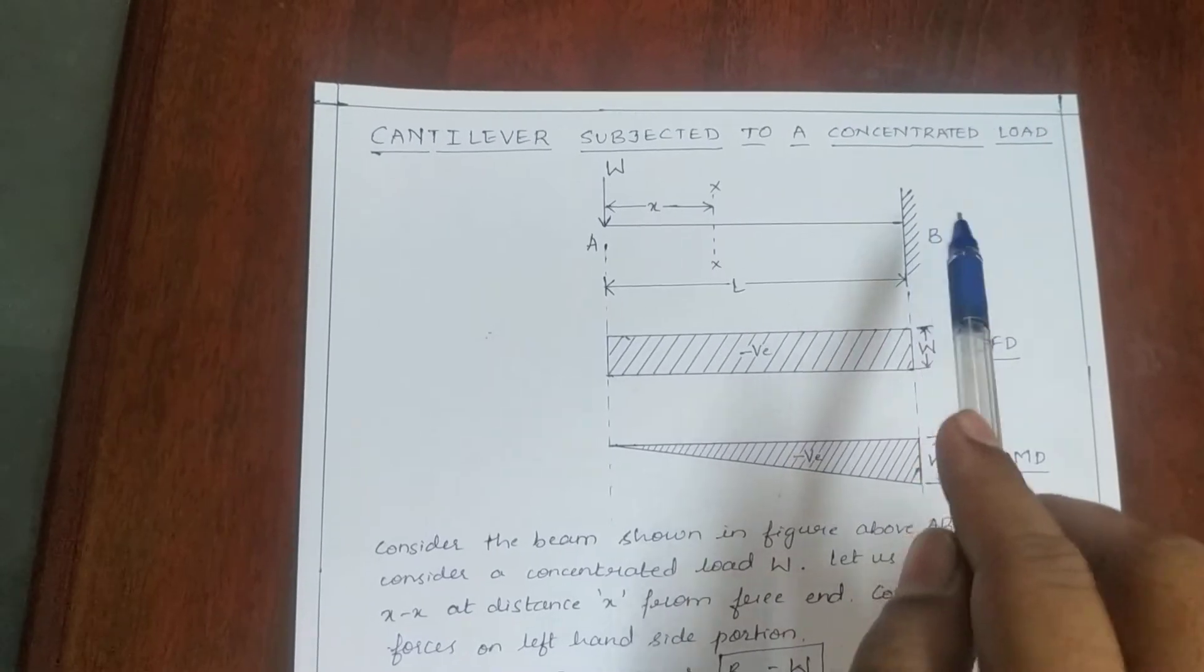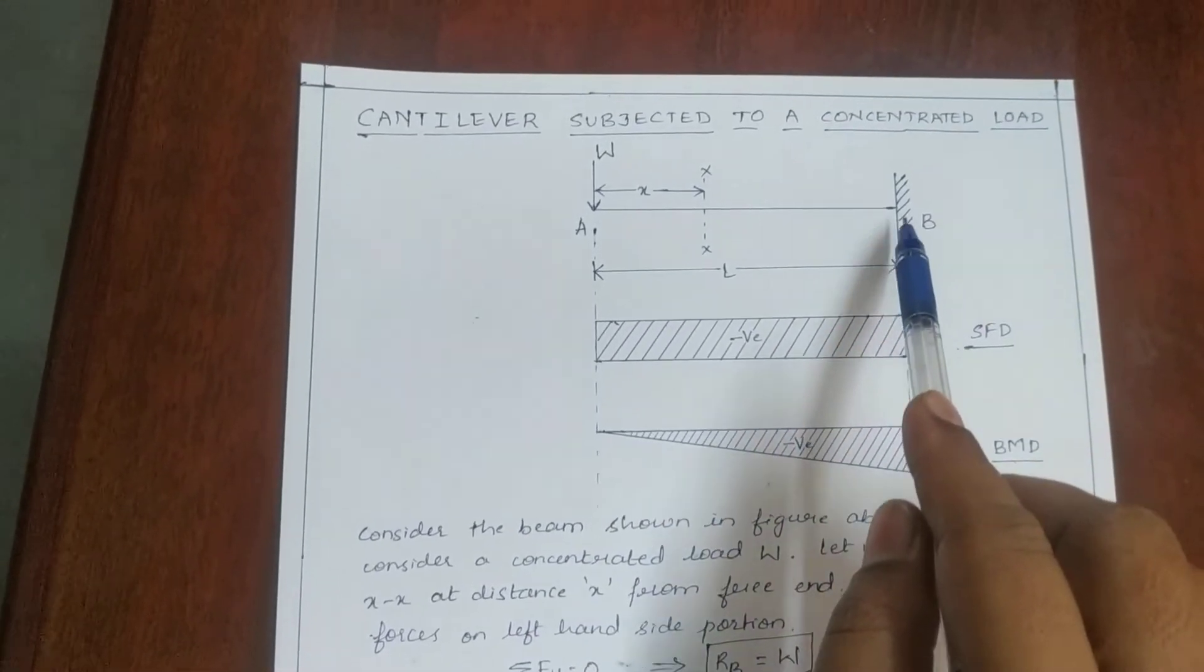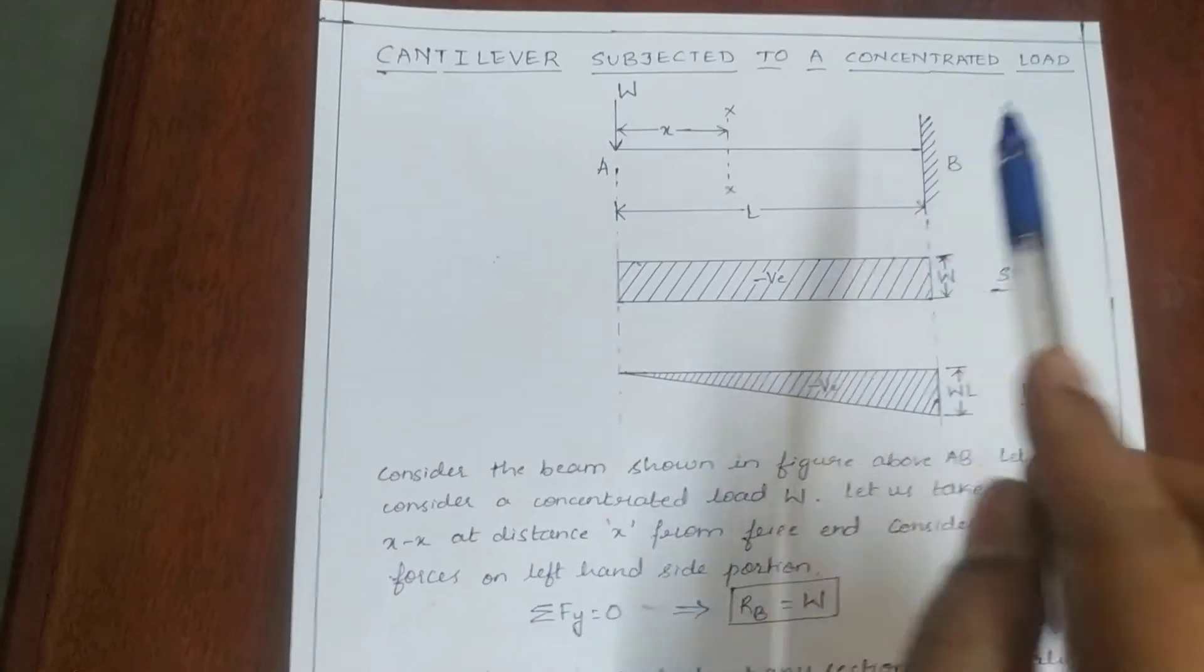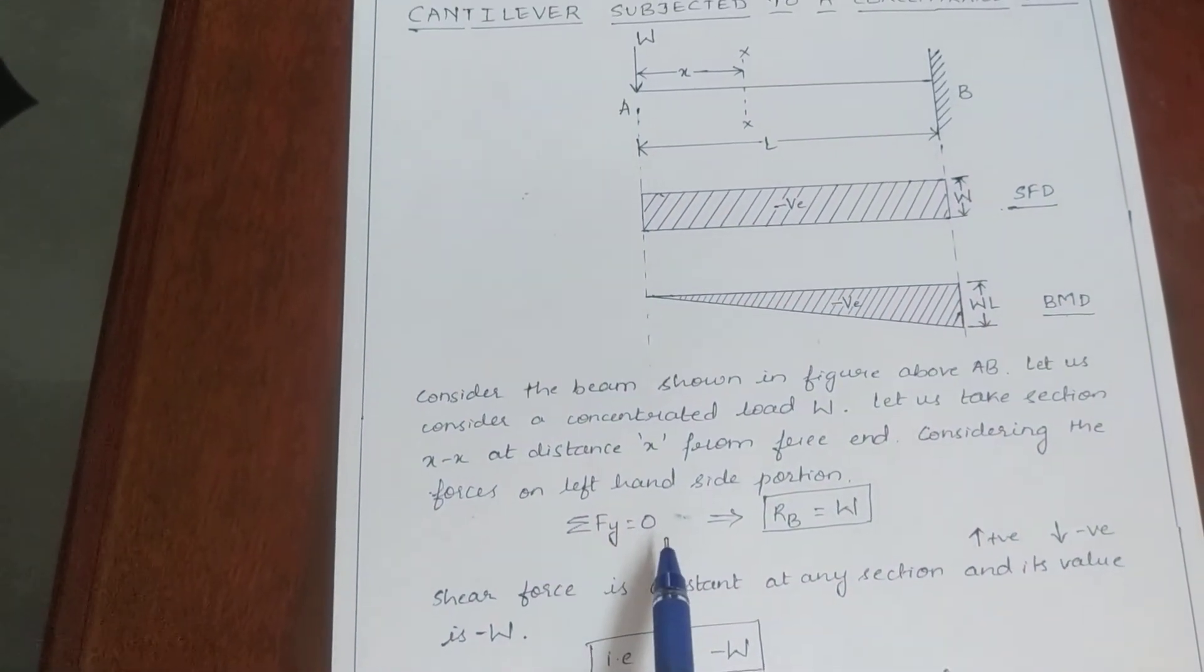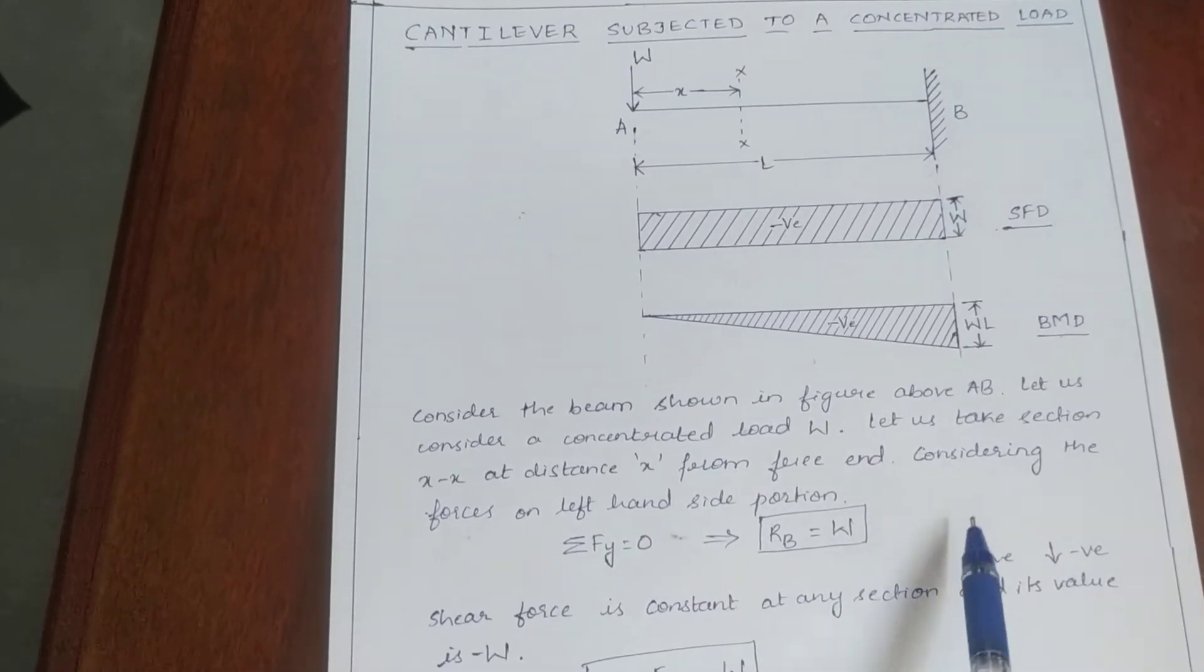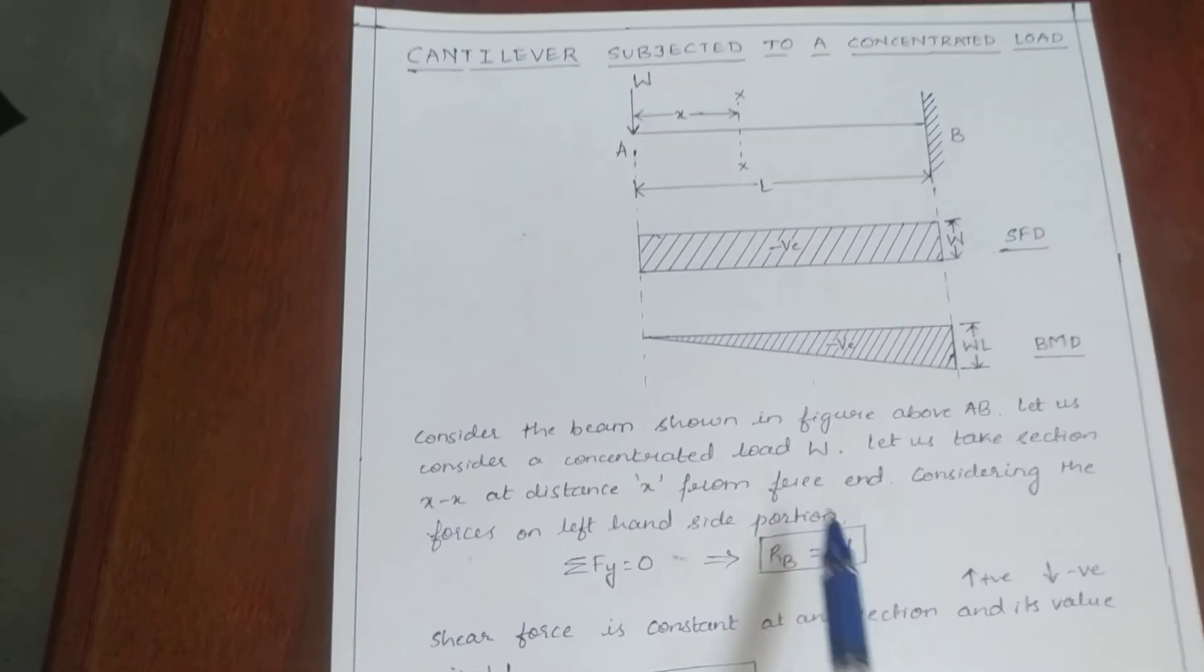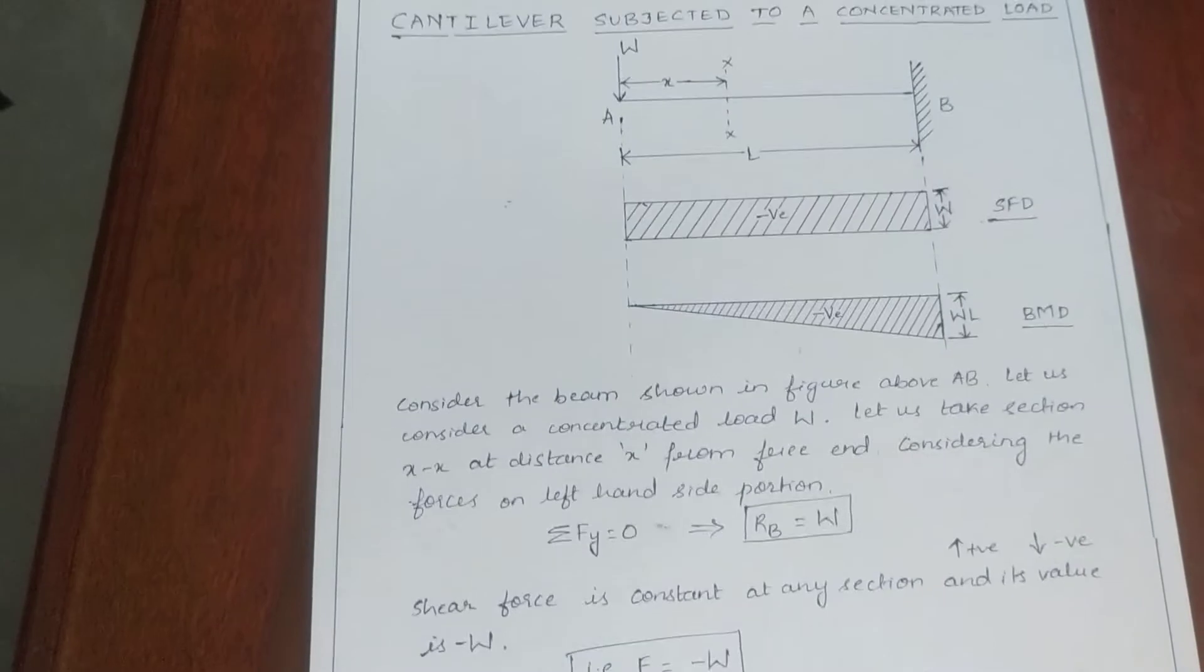Here there is no horizontal force. So let us consider the reaction RB, and we know that the summation of vertical forces is always zero. So the reaction RB is upwards, that is equal to the downward concentrated load W. RB equals W.